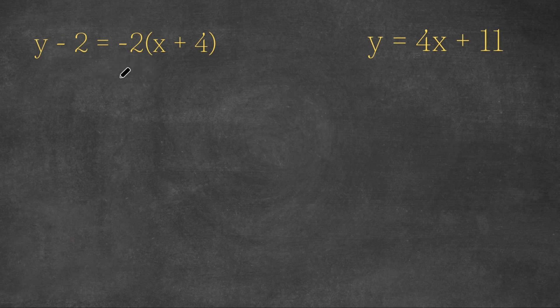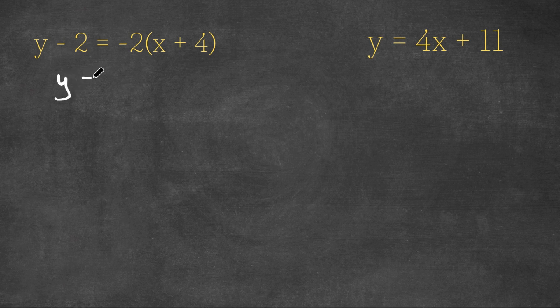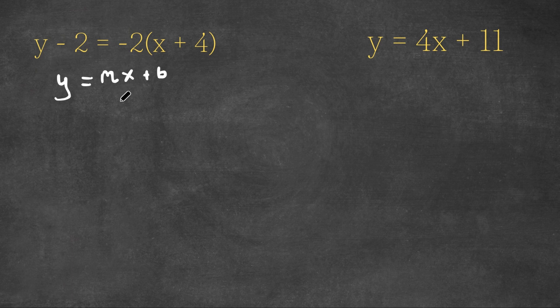So as you can see, right here, we have y minus 2 is equal to negative 2 times x plus 4, and we want to convert this equation in the form y is equal to mx plus b. Because this is the form of the equation in slope intercept form.